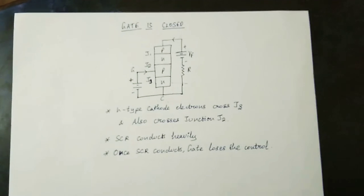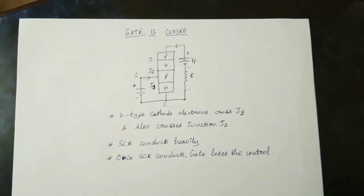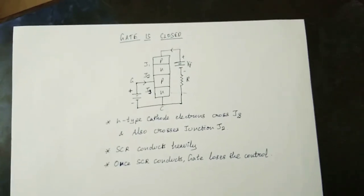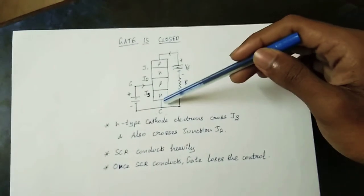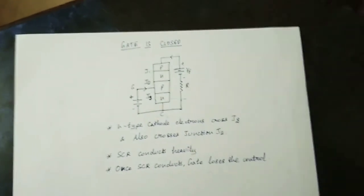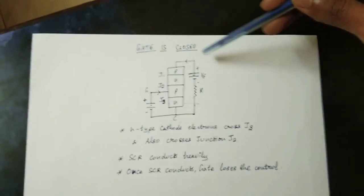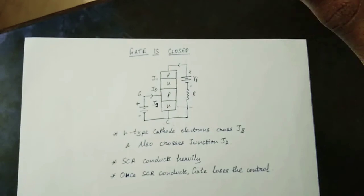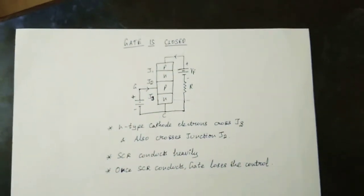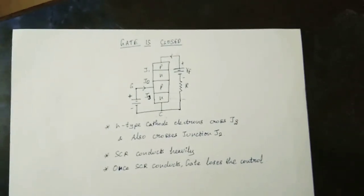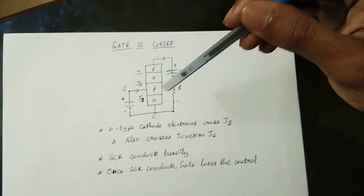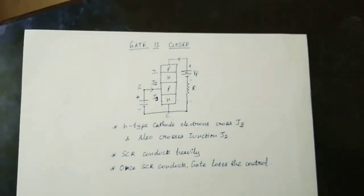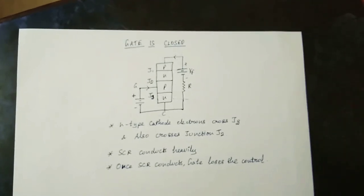When the gate terminal is applied with positive voltage, the gate is turned on. The gate is positive and P is negative. The holes from the gate inject into J3, and J3 crosses into J2. When installed, J2 carries a high amount of current flow. You are able to do a high amount of current flow — this is the start of the on state. If you reduce the gate, you can reduce the current flow.